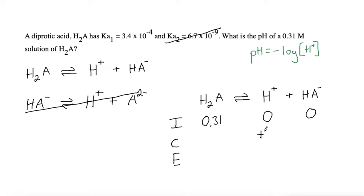They're all balanced at 1 to 1, so it'd be plus x, plus x, and minus x. So the E line is 0.31 minus x, x, and x.